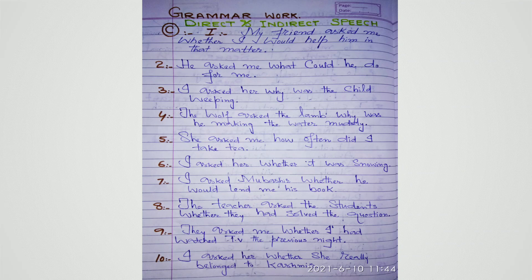Question 3: I said to her, 'Why is the child weeping?' — I asked her why the child was weeping. Present continuous changes to past continuous. The question mark is removed and full stop is added. Question 4: The wolf said to the lamb, 'Why are you making the water muddy?' — The wolf asked the lamb why he was making the water muddy.